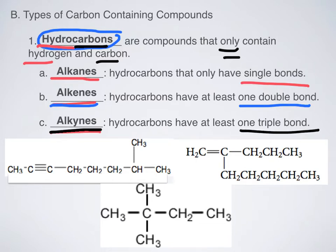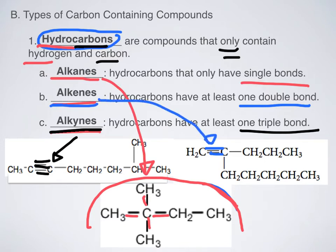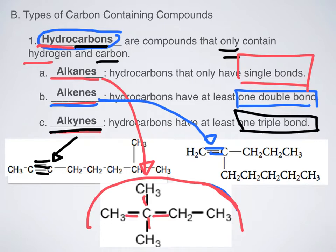Take a look at these pictures. Right here we have only single bonds — that's why we have these lines here. Over here we have a double bond. And then over here we have a triple bond. So this would be an alkyne, this would be an alkane, and this would be an alkene. Again, they sound very similar, so make sure you know which one has the double bond, which one has the single bond, and which one has at least one triple bond.